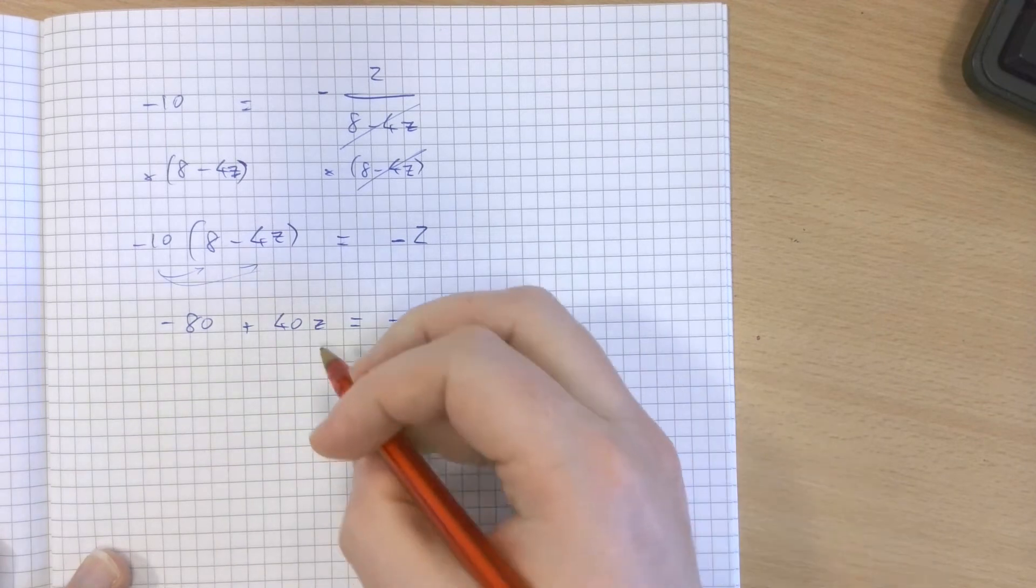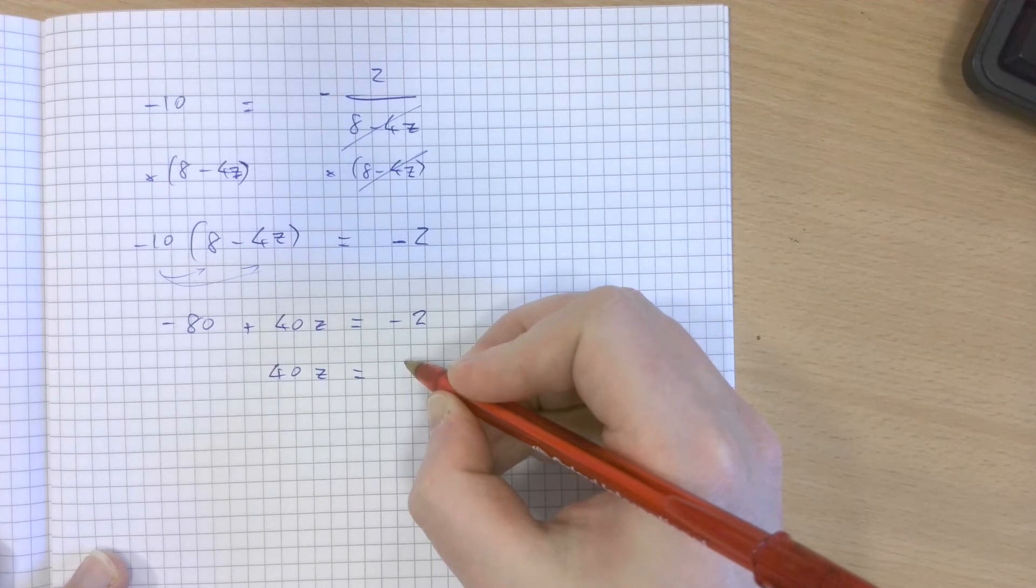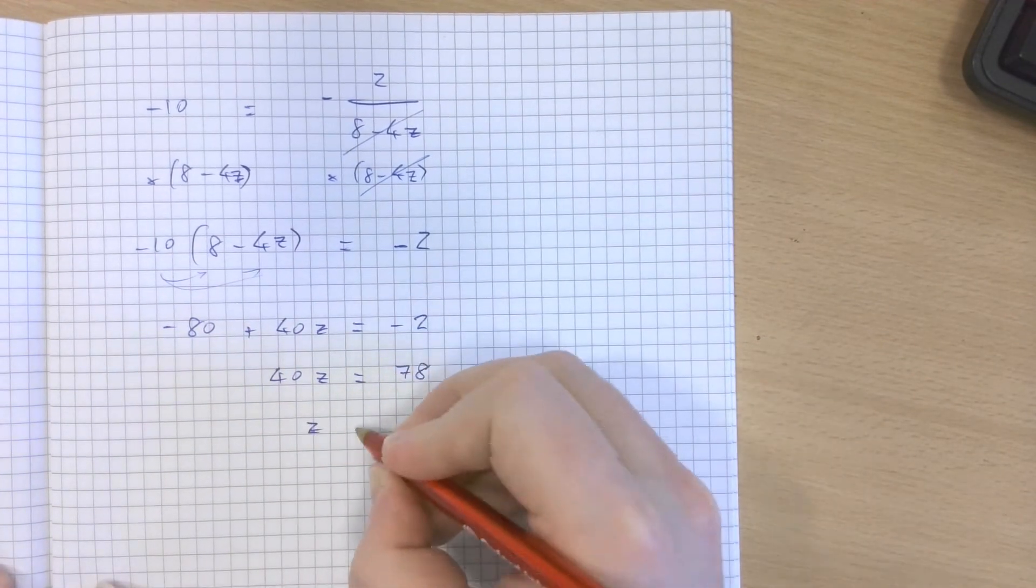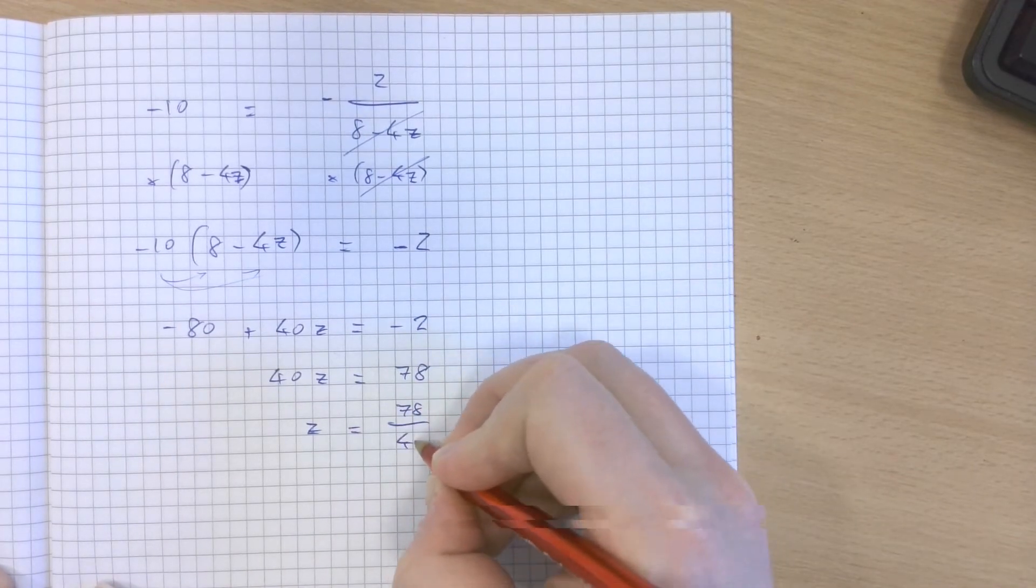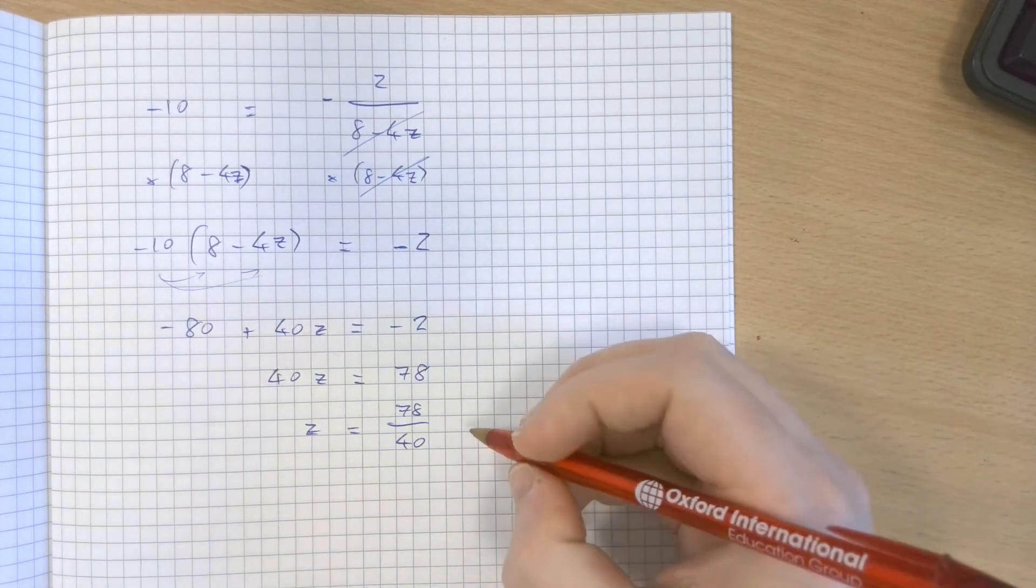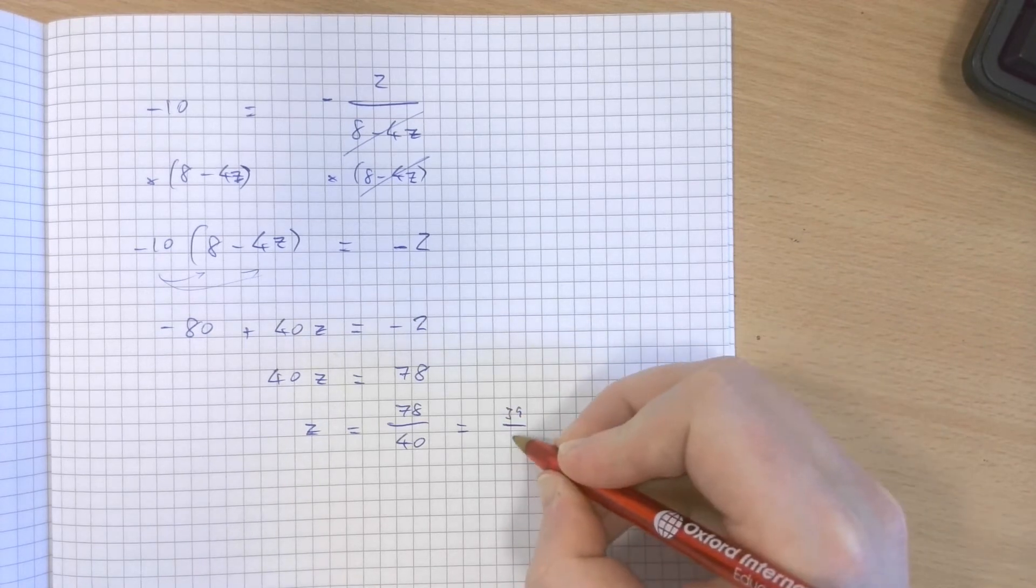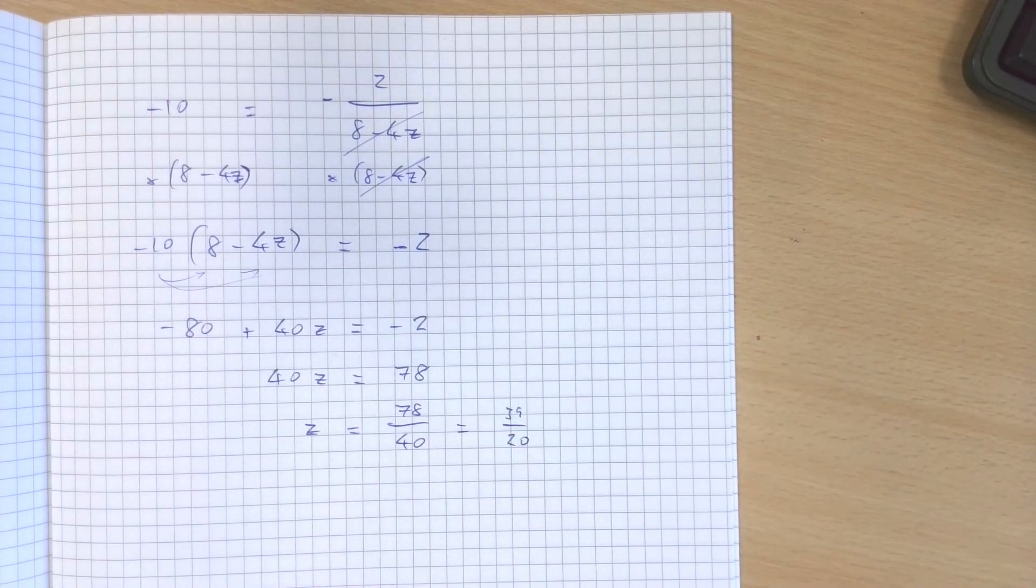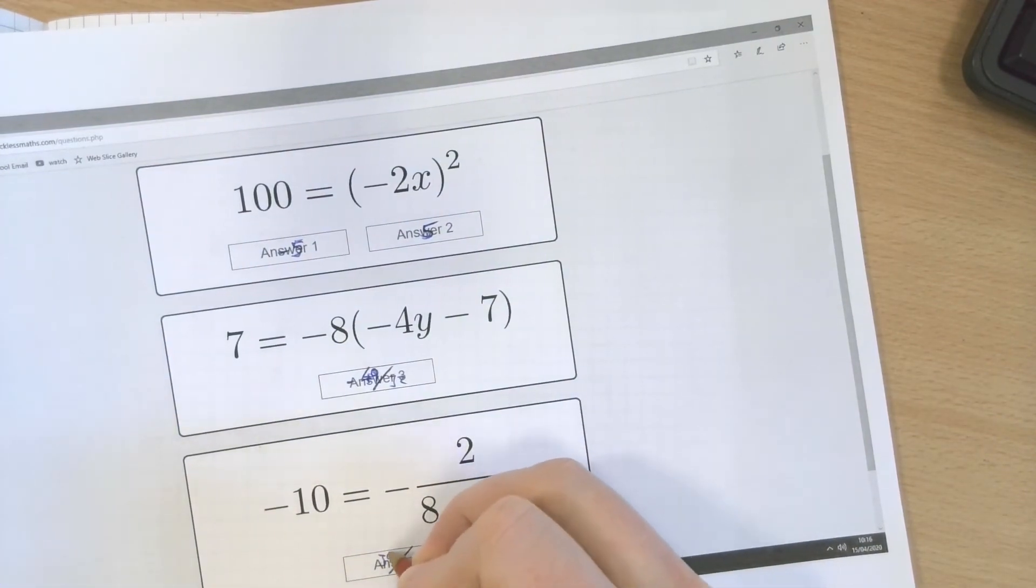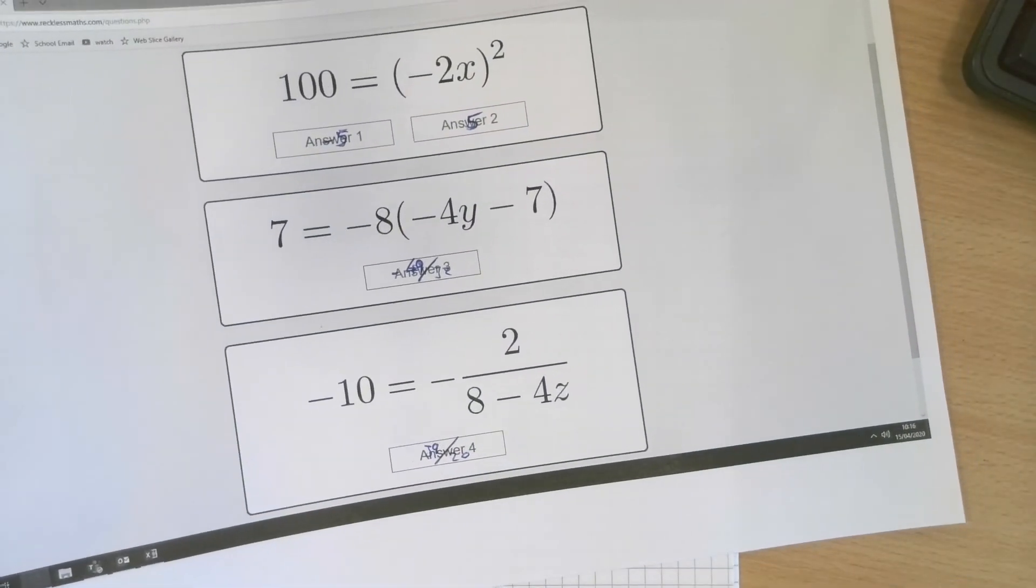If I add 80 to both sides, I end up with 40z equals 78. Divide both sides by 40, and that will be my final answer: 78 over 40. You can simplify that by halving top and bottom, 39 over 20. So having popped that into my answer sheet, 39 over 20, submit them in and see what you get. You should be getting three out of three on that.